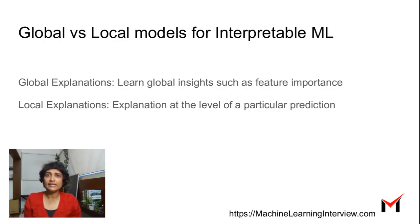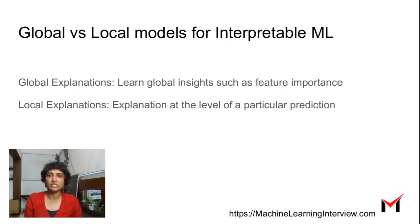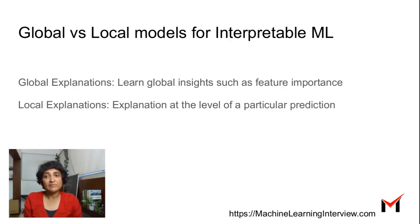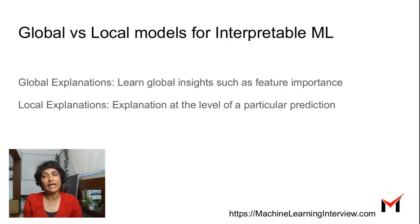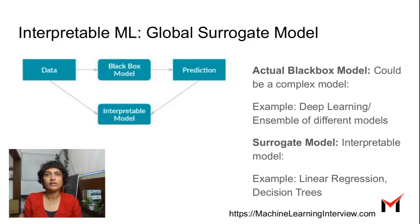When we look at the options we have to interpret ML models, typically we are looking at two kinds of explanations. One is global explanations that learn global insights — for example, overall what is the importance of a particular feature for this particular model. And local explanations that explain at the level of a particular prediction. We will look at one particular technique called the global surrogate model.